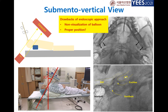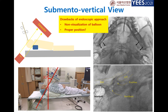You can clearly see where the balloon is. In the fluoroscopic examination, we used a guide wire inserted into the tympanum, then pushed the balloon over the guide wire so we could confirm the exact location of the balloon.